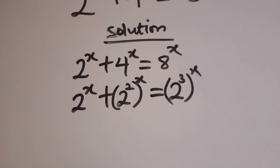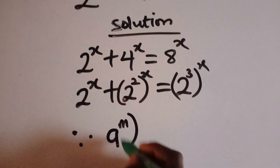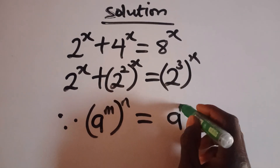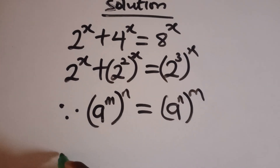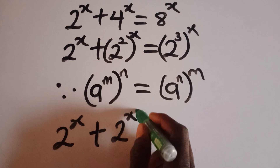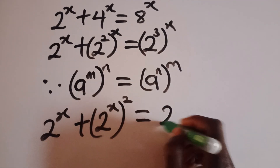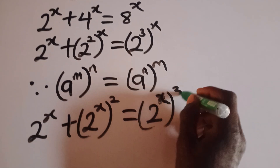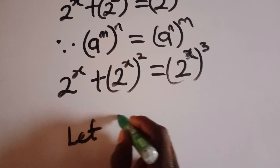Don't forget the principle that says whenever you have a raised to the power m, everything raised to the power n, it can simply be written as a raised to the power (m times n). Let's apply that here. We'll have 2 to the power x plus 2 raised to the power 2x, everything squared, equal to 2 raised to the power x, everything cubed.